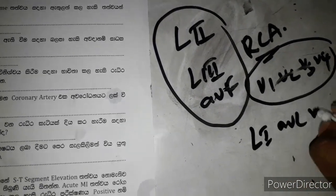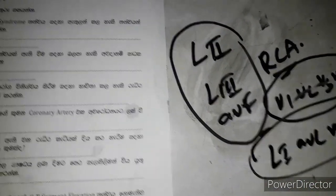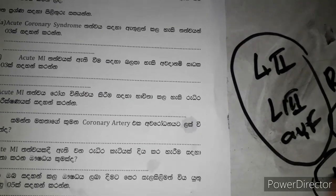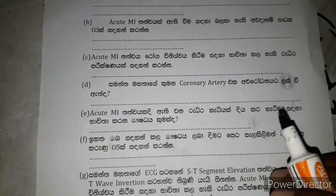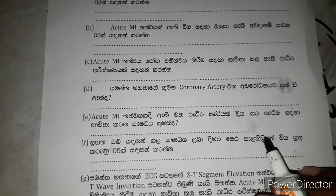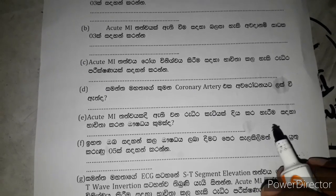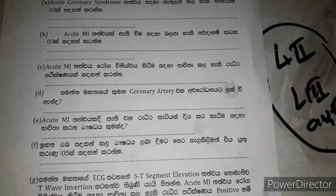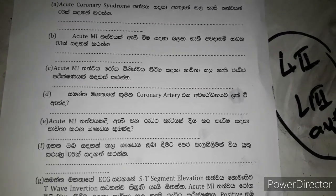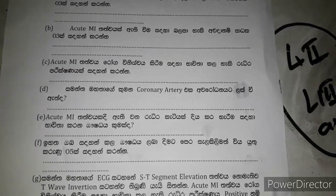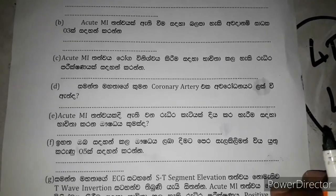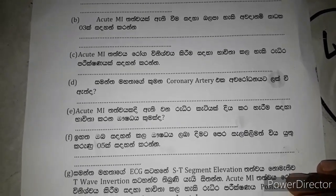L1, AVL, V5, V6 represent the left lateral wall complex. L2, L3, AVF correspond to the inferior wall. F3 is associated with the right coronary artery territory. If the body is still damaged, you can see involvement in this region.